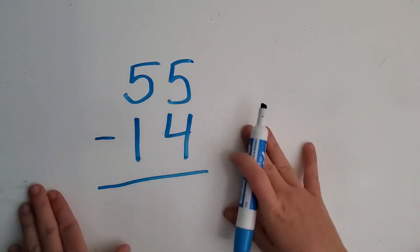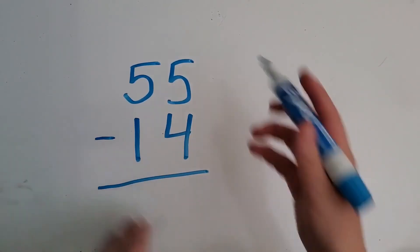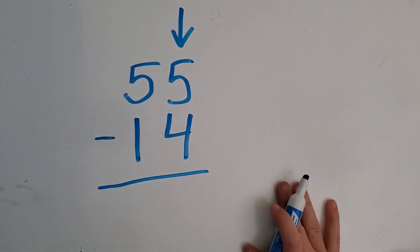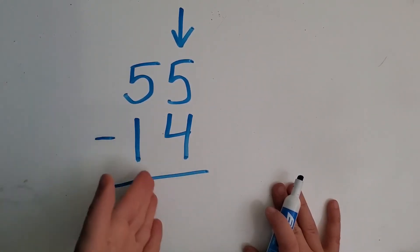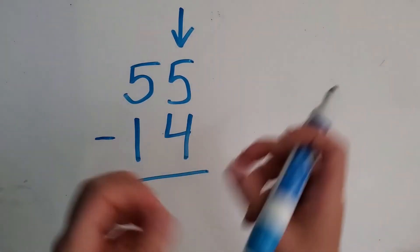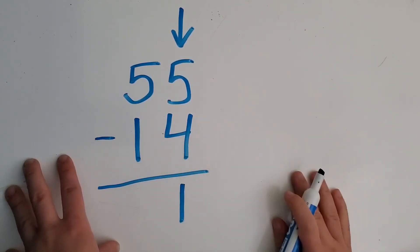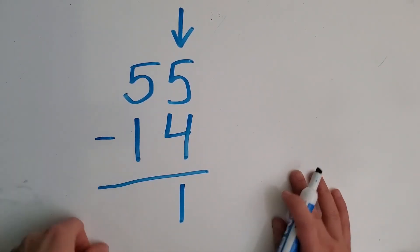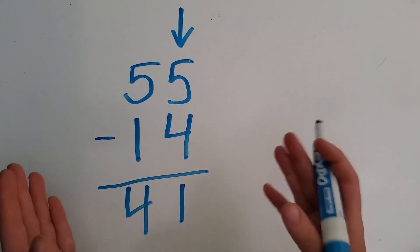We're not going to use our chart and we're not going to use our models. Which side do we start with? The ones — we always start with the ones. So five minus four. You can use subtraction facts you know, your hands, or different objects. Five minus four equals one. Then we go over to the tens: five minus one equals four. Four is one less than five, so five minus one equals four. So there are 41 birthday banners that are not red.